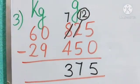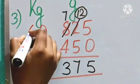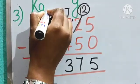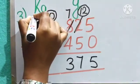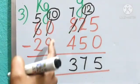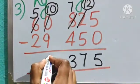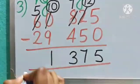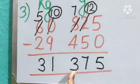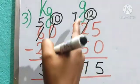Now here, 0 minus 9. Yes, again we can't do. So what we will do? We will borrow 1. Now this 0 became 10, and this 6 became 5. So 10 minus 9, 1. 5 minus 2, 3. So 31 kg and 375 gram.